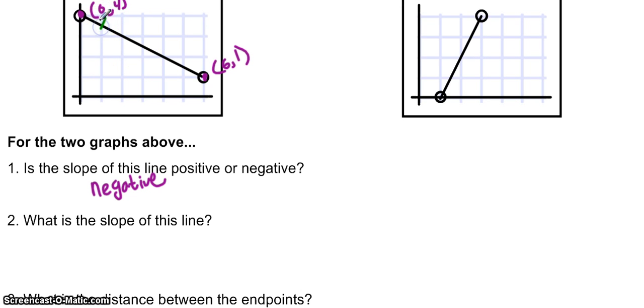So you can even label your points if you like, right? We call this maybe x1, y1, x2, y2, then we can go ahead and plug these into our formula. One minus four over six minus zero. One minus four is negative three. Six minus zero is six.